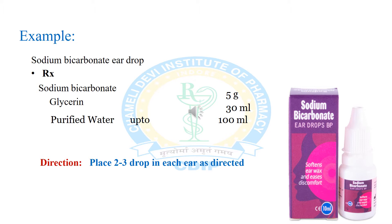We have to prepare sodium bicarbonate ear drops 100 ml. Ingredients are sodium bicarbonate 5 grams, glycerin 30 ml, and purified water up to 100 ml. First dissolve the required quantity of sodium bicarbonate in purified water. After complete dissolution, add glycerin and more purified water to produce the required volume. Transfer into a bottle, label, and dispense. The label must contain the direction: place 2 to 3 drops in each ear as directed.